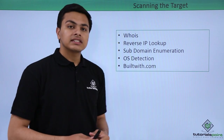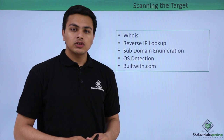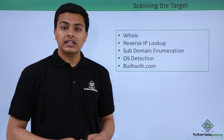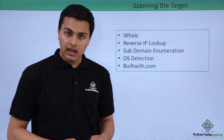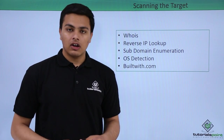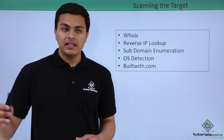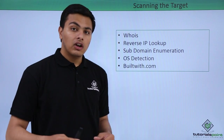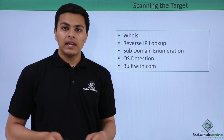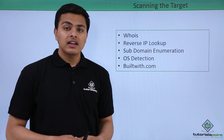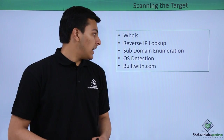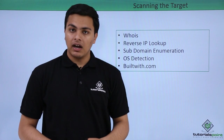The third step is subdomain enumeration. Subdomain enumeration is the process of finding different subdomains of our target. For example, if our target is google.com, we want to know what subdomains are associated with it, because sometimes vulnerabilities are not present in the parent domain but may be present in subdomains. That's why subdomain enumeration is an important part.